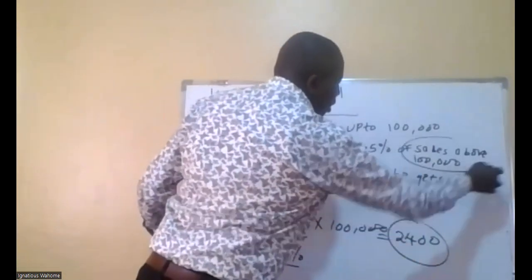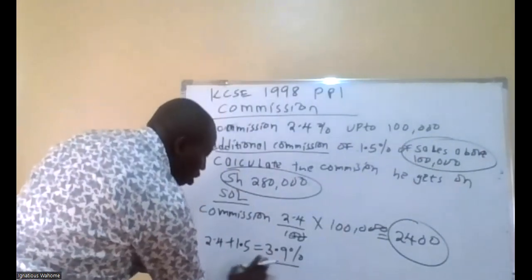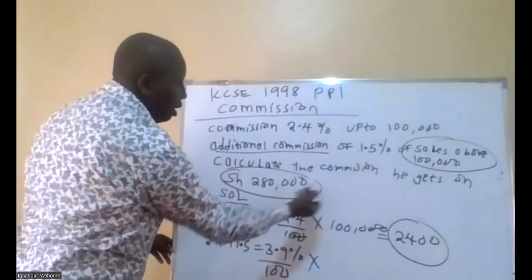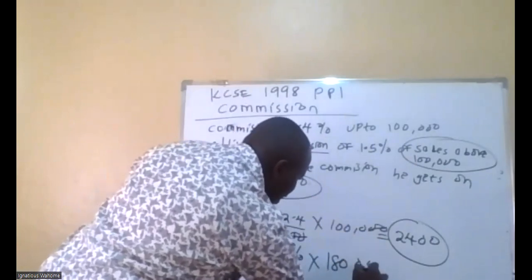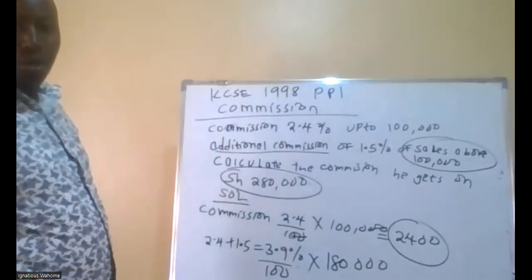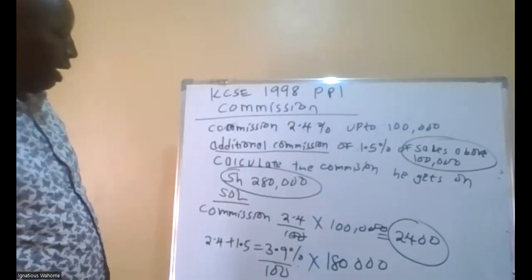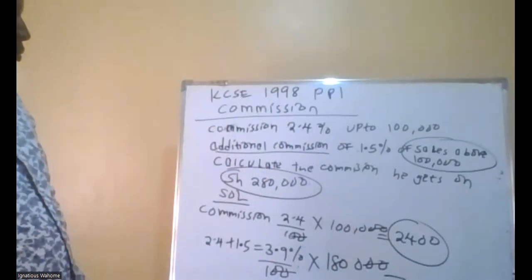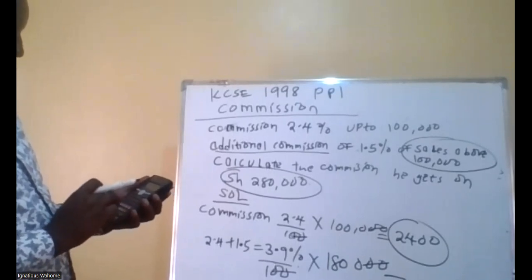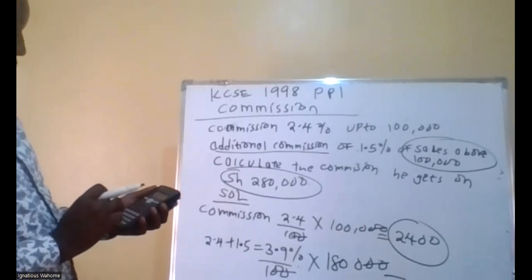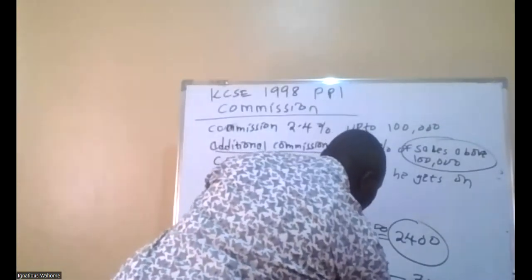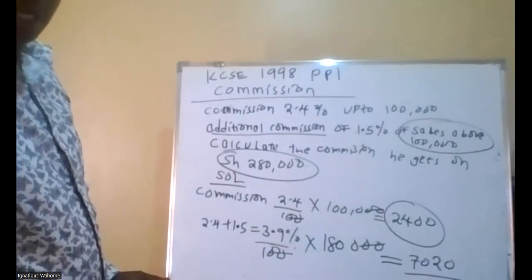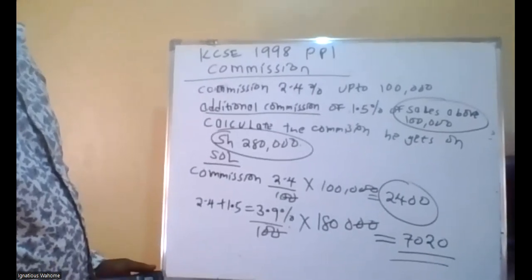Above 100,000. So therefore it is 3.9% of sales that were above 100,000, which is 280,000 minus 100,000, giving 180,000. You cancel the common factors and get 3.9 times 1,800, which gives 7,020. That is the second commission.